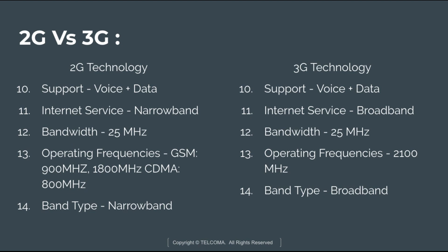The 2G technology operating frequencies are GSM 900 MHz, 1800 MHz, and CDMA 800 MHz, whereas the operating frequency of 3G technology is about 2100 MHz. The 2G technology has a band type of narrowband and 3G technology has a band type known as broadband.